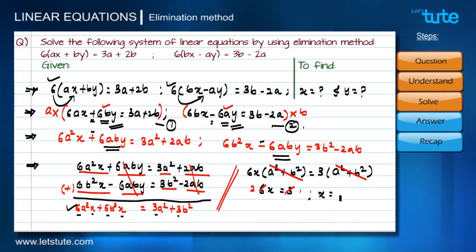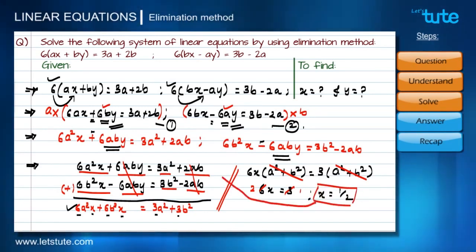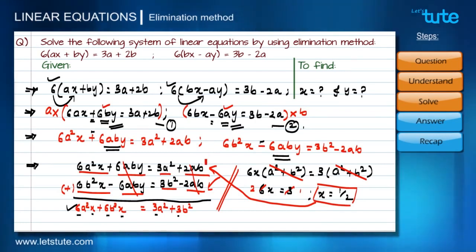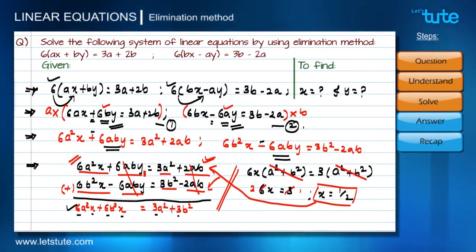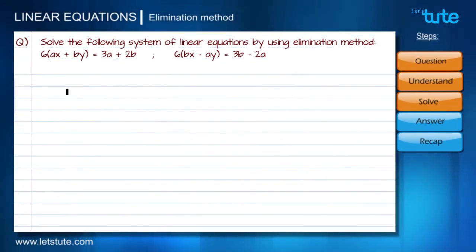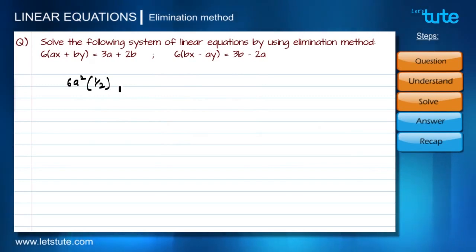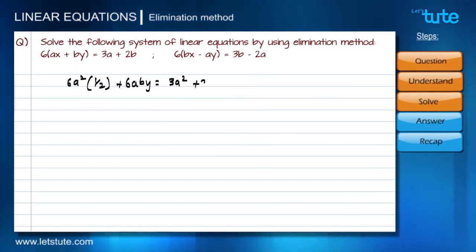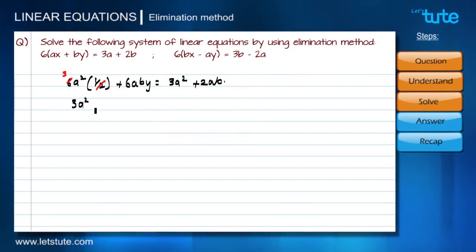Now we substitute x equals one-half into equation one — the multiplied form: six·a²·x plus six·ab·y equals three·a² plus two·ab. Substituting x as one-half: six·a² times one-half gives three·a², so three·a² plus six·ab·y equals three·a² plus two·ab.